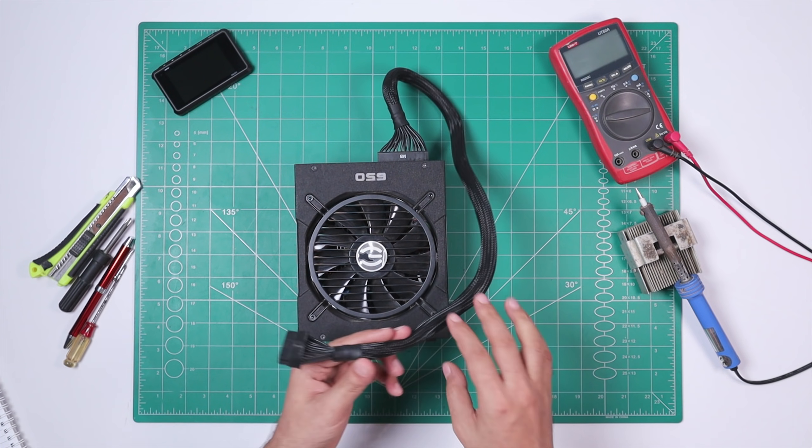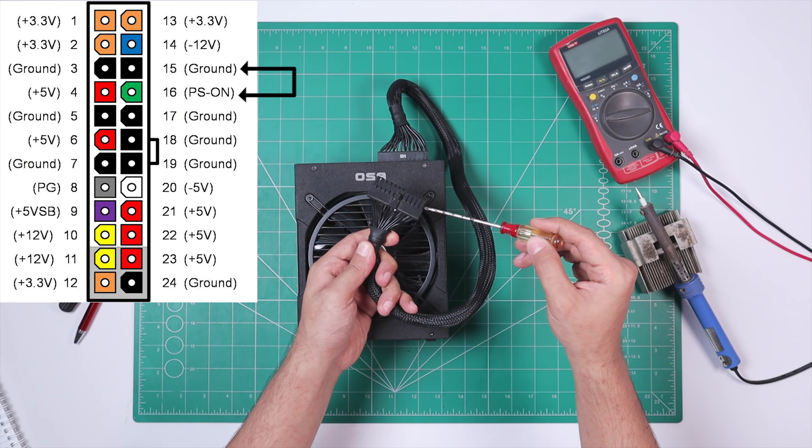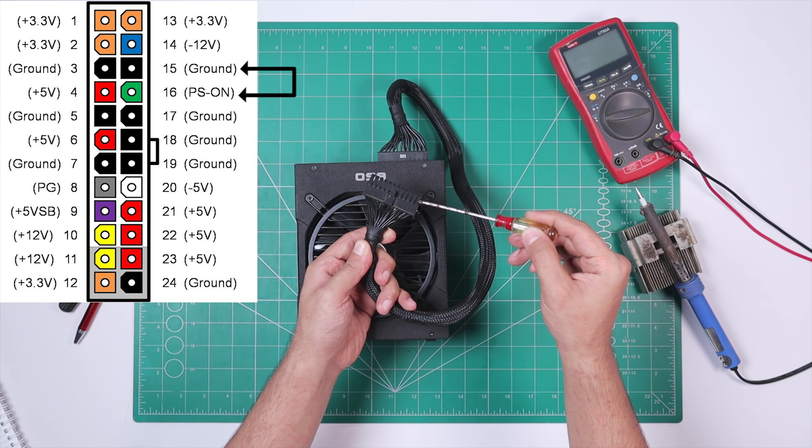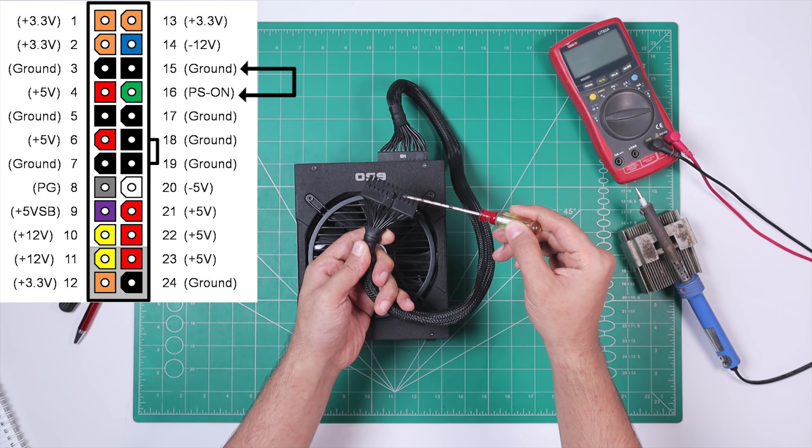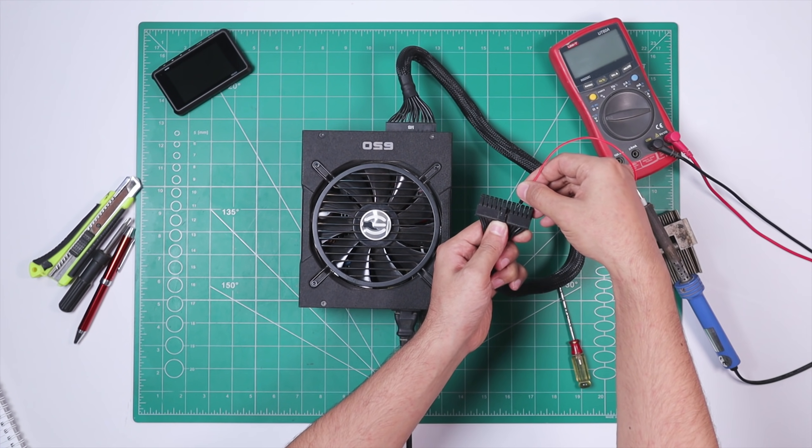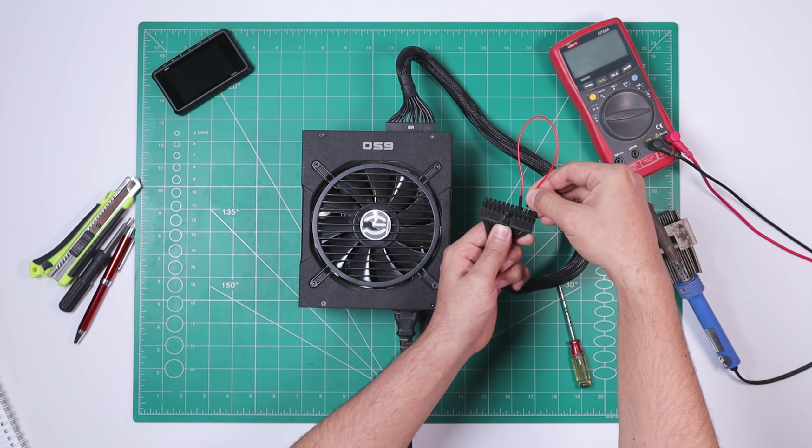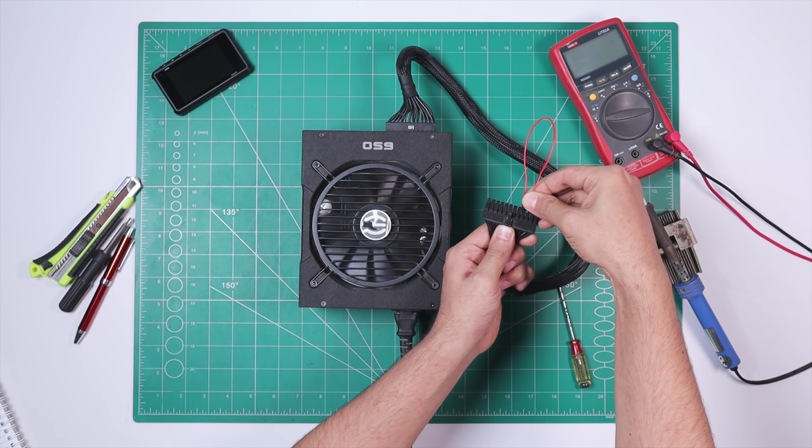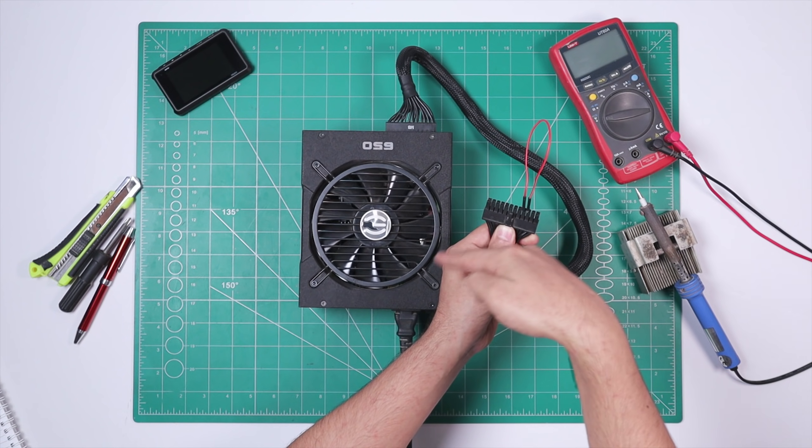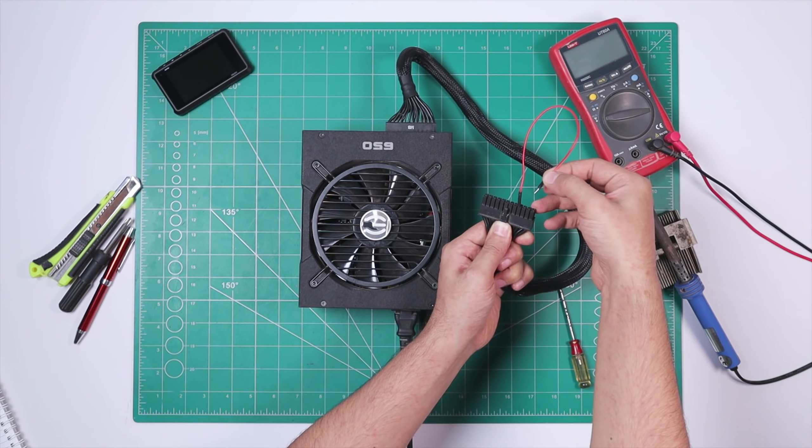So in order to manually turn on any PSU, you just need to short out green and black wire, either with a paper clip or with a piece of wire. And there you go, as you can see that the power supply is turning on for just a second and then shutting itself off back again.